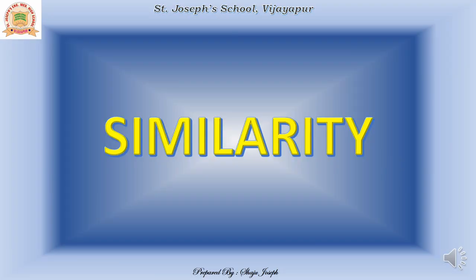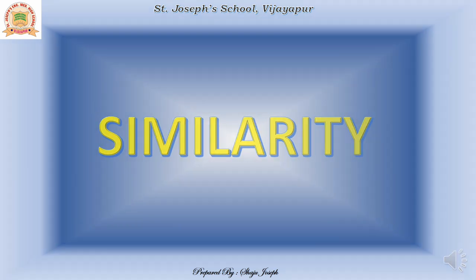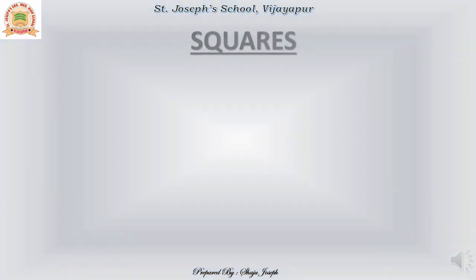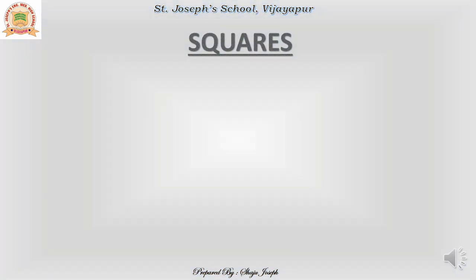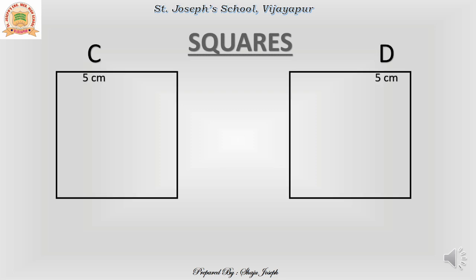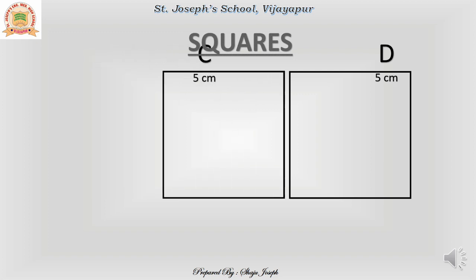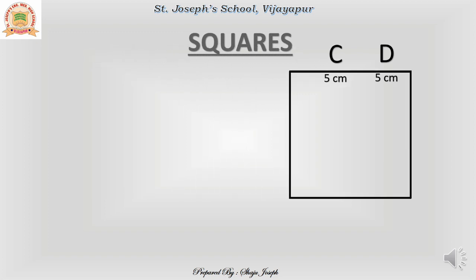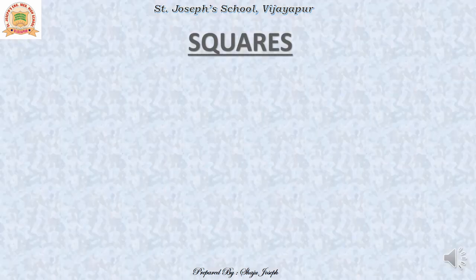Hi everyone, let us discuss about similarity. Here I am going to compare two squares, one called C and another one called D. Both of them have the edge 5 cm. When we place one on the other, we find that they both fit into each other perfectly. These are called equivalent squares.